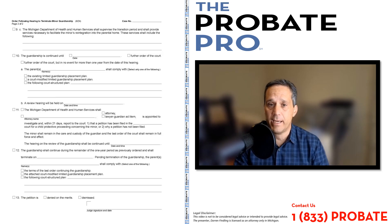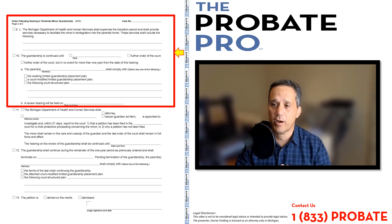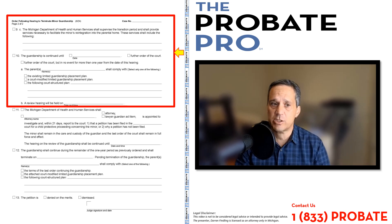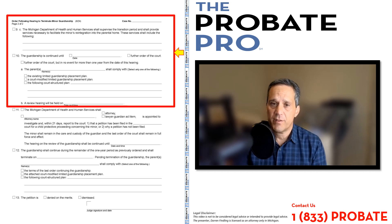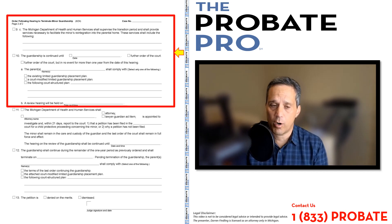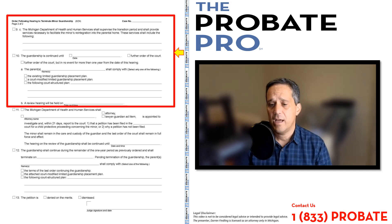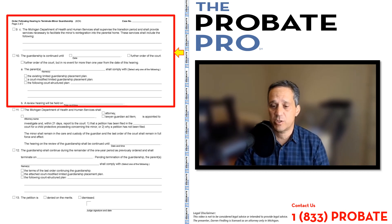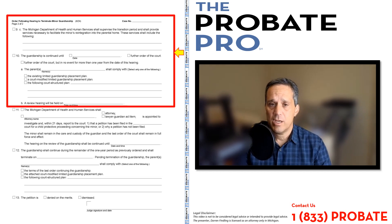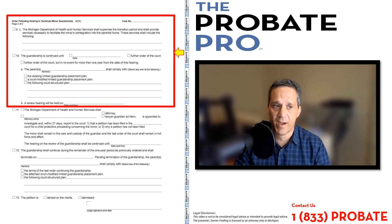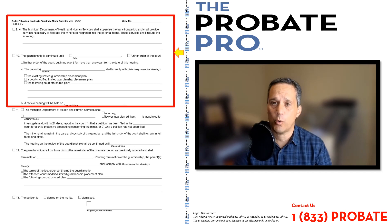Moving to page two of the document, paragraph nine C provides that the Michigan Department of Health and Human Services shall supervise the transition period and facilitate the reintegration of the minor back into the parental home. This is part of the statutory basis for a limited guardianship, and the services that should be provided by MDHHS — the acronym for Michigan Department of Health and Human Services — shall include the following, with a place for the court to identify the particulars.